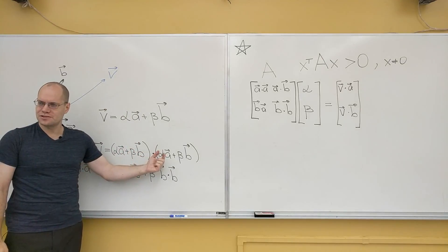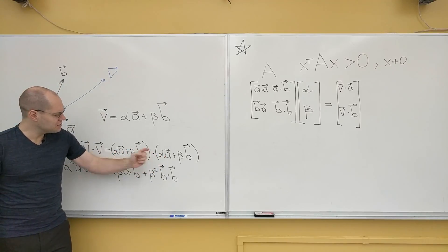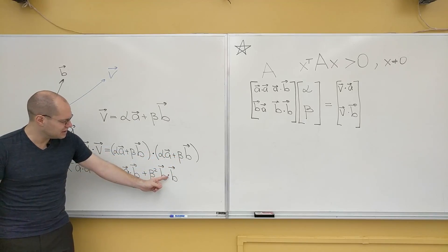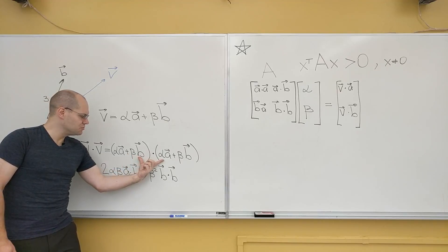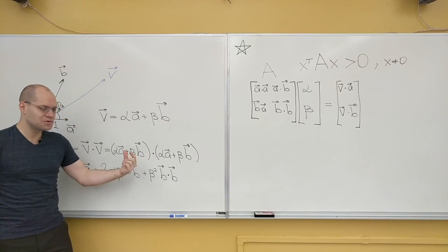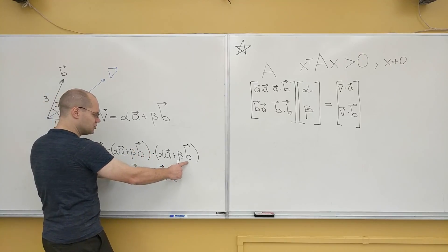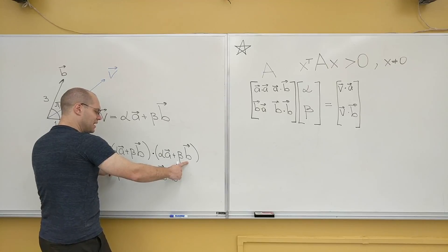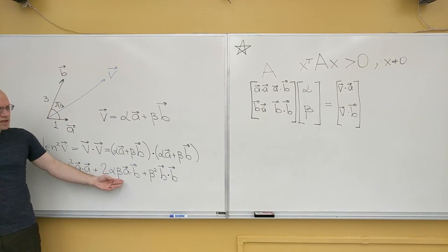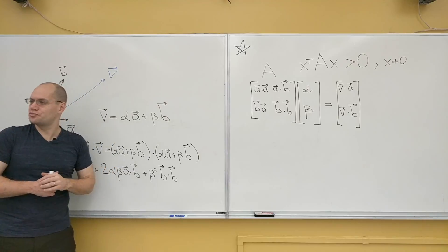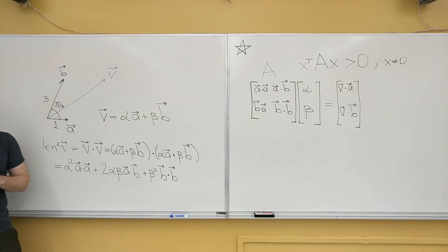There will be four terms. This one meets this one, we get α squared a dotted with a. When this one meets this one, we get β squared B dotted with B. But when these two meet, we get α β a dotted with B. The order doesn't matter, a dotted with B is the same as B dotted with a. And when these two meet, we get the exact same thing, α β times a dotted with B. And so those two can be combined. Even though in this case combining these two is inconvenient, we actually want them apart because they correspond to something when we rewrite this in matrix terms.